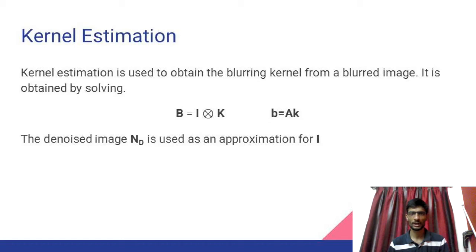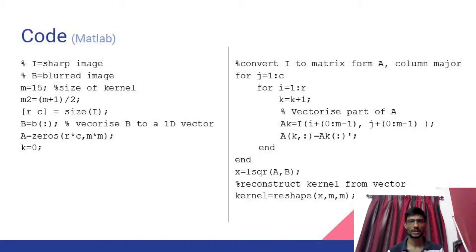Blurring is defined as the convolution of an image I with a kernel K. In simple linear algebra terms, this can be represented as B equals AK, where B is the blurred image, A is the denoised image and K is the blurring kernel. The code simply tries to solve the linear equations mentioned before.